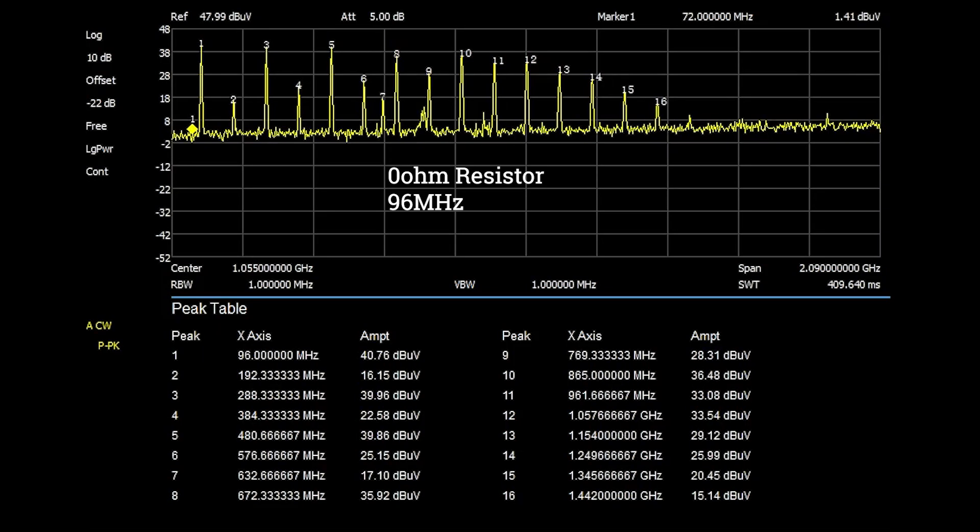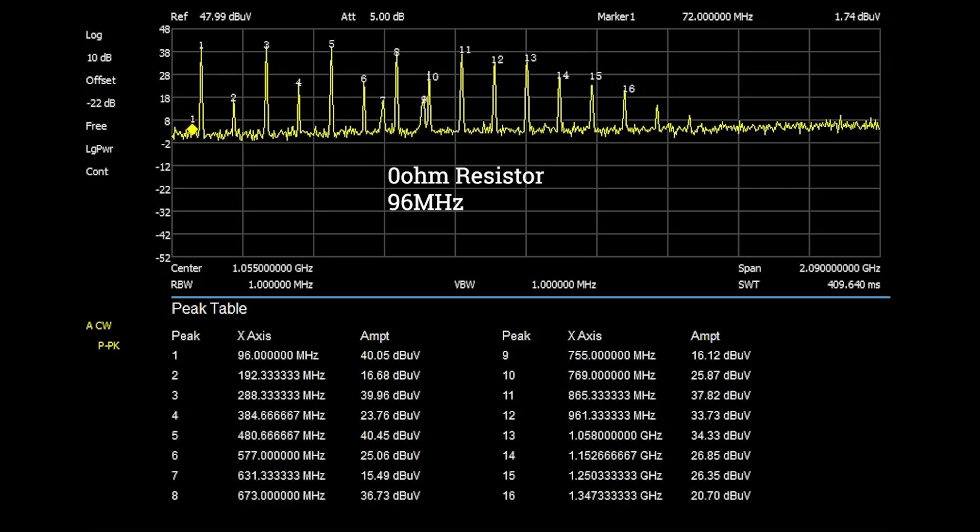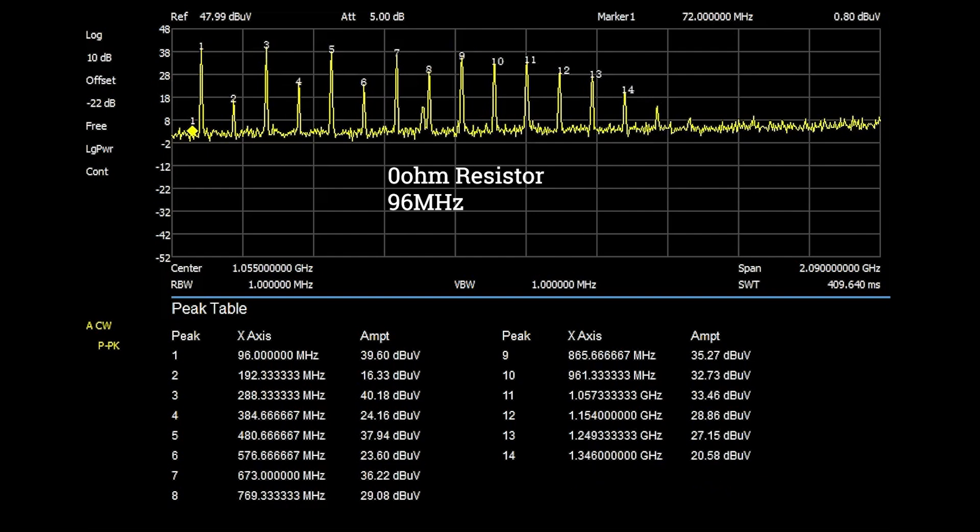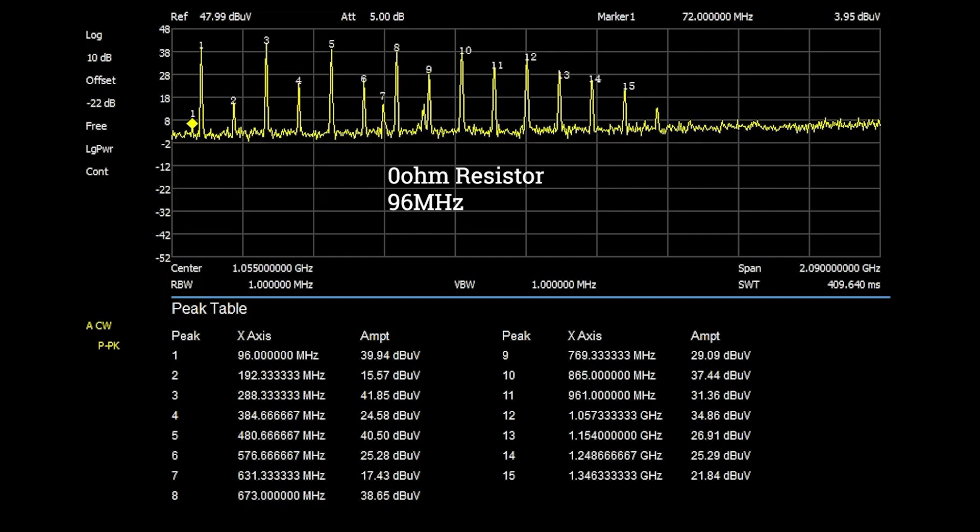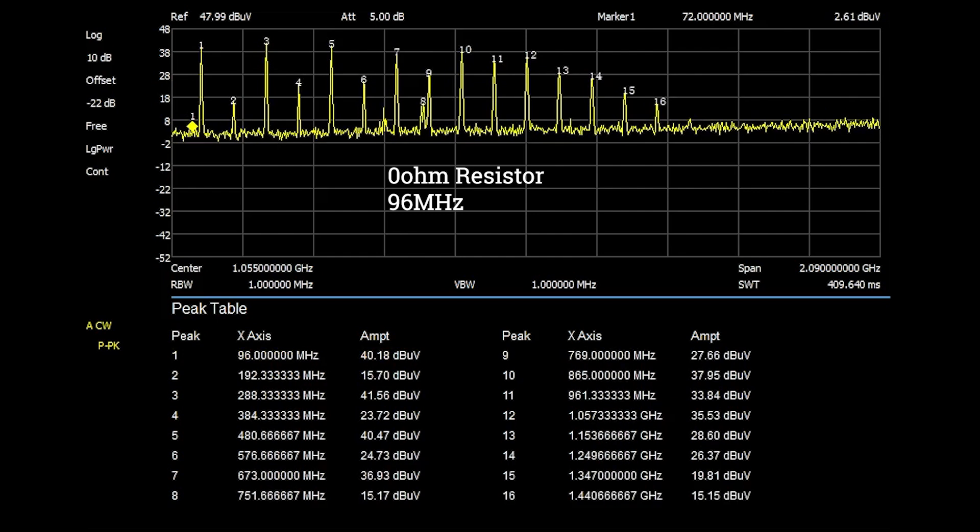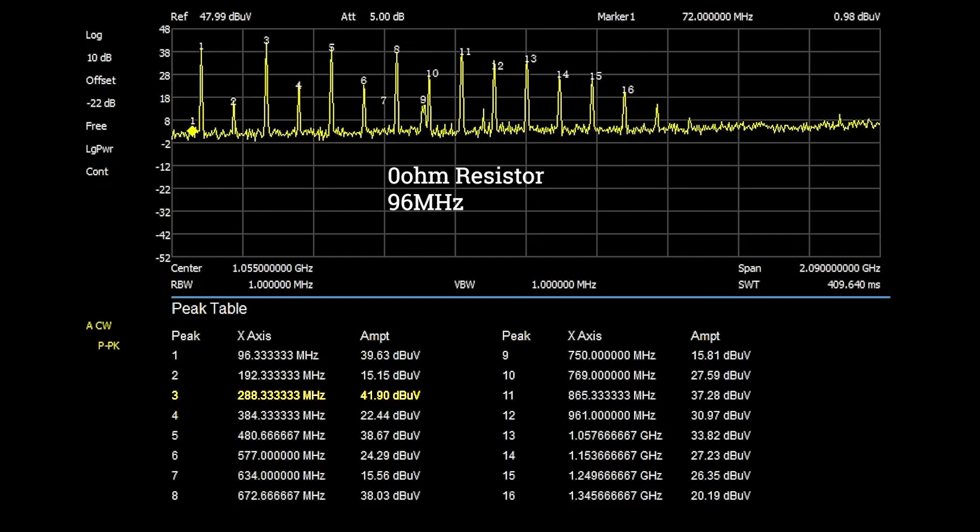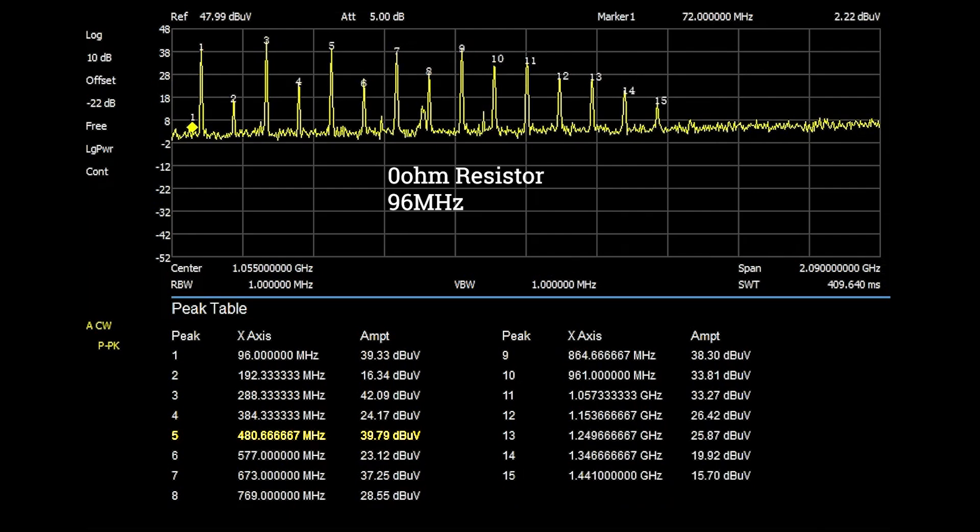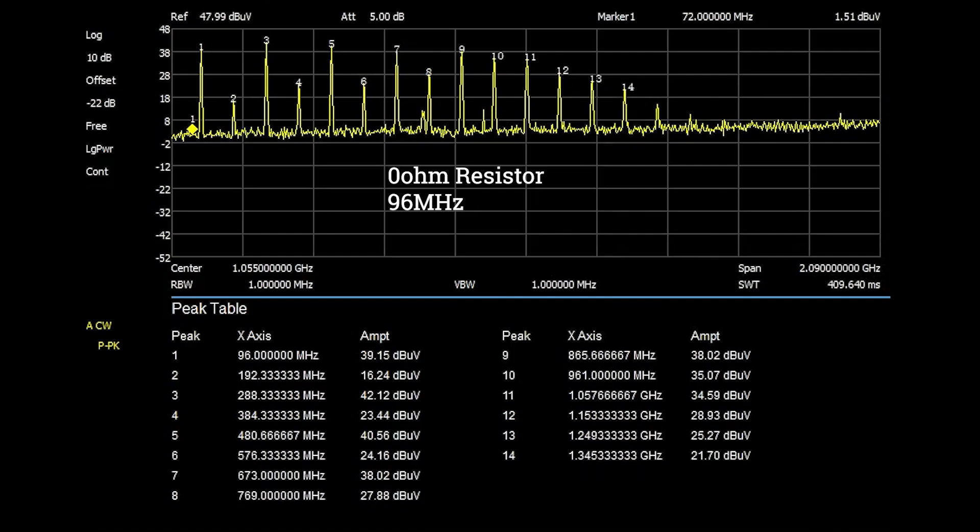I started with a 0 ohm resistor using the E field probe. What is really neat is that you can clearly see that only the odd harmonics have any substantial energy which is completely expected with a 50% duty cycle square wave. The fundamental frequency of 96 megahertz is at 40 dB µV. The third harmonic at 288 megahertz is 42 dB µV. The fifth harmonic at 480 megahertz is 38 dB µV and the ninth harmonic at 864 megahertz is 40 dB µV. What is important to note is how up until the ninth harmonic the power really doesn't roll off at all. After the ninth harmonic it starts to roll off pretty quickly.